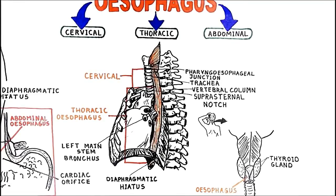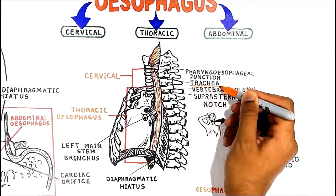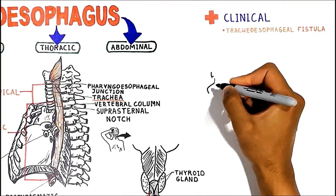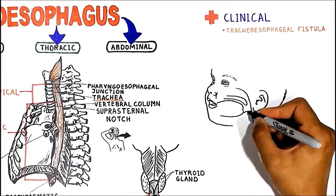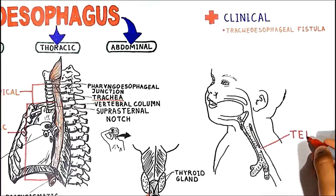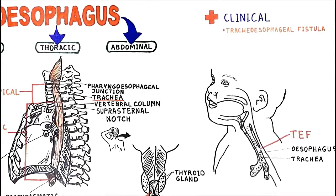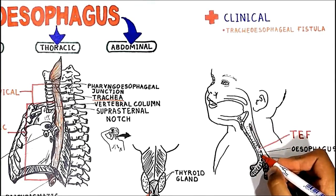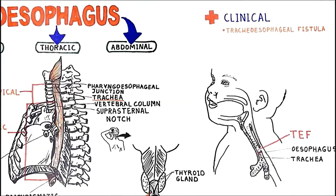The thoracic esophagus runs behind the trachea. During embryological development, there can be an abnormality in esophageal and tracheal development resulting in a birth defect called tracheoesophageal fistula — an abnormal connection in one or more places between the esophagus and the trachea. When a baby with this fistula swallows, liquid can pass through the abnormal connection into the trachea and get into the lungs, causing pneumonia and other problems.